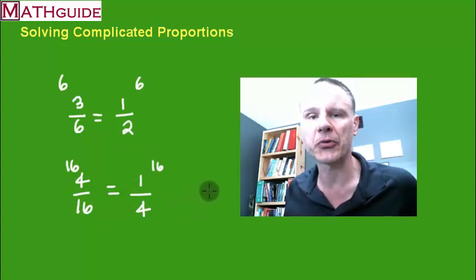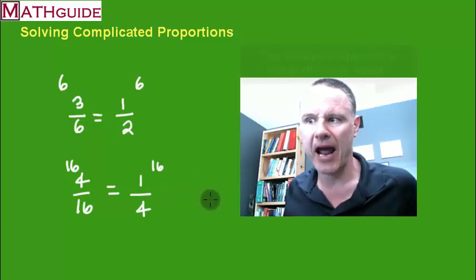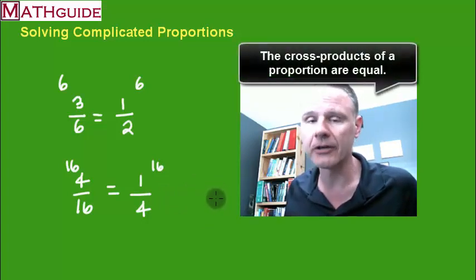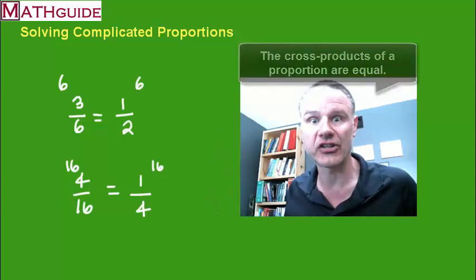I'm going to make use of this particular property. That when two fractions are equal we have a proportion, and the cross products of that proportion are going to be equal. Okay so in the next two sections let's use this property.